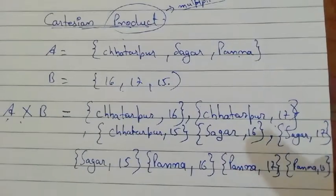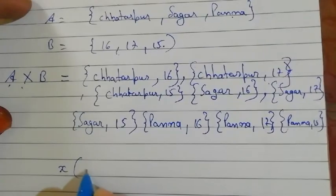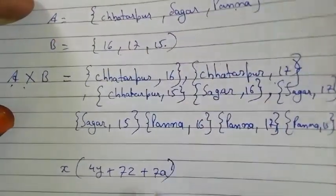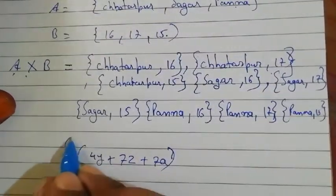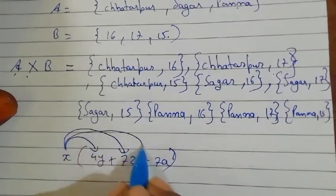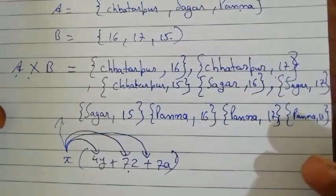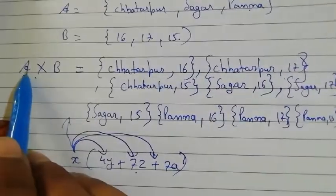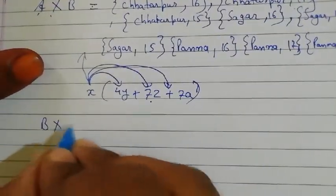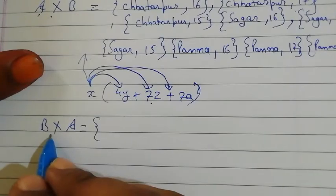Like in multiplication with brackets, where we distribute the multiplication across all elements in the bracket — we apply that same formula here in Cartesian product. But note: this is the product of A×B. If we have to find the product of B×A, we first write the element of B only.